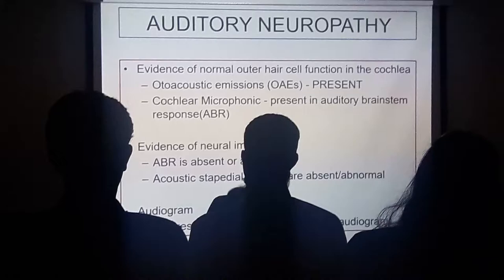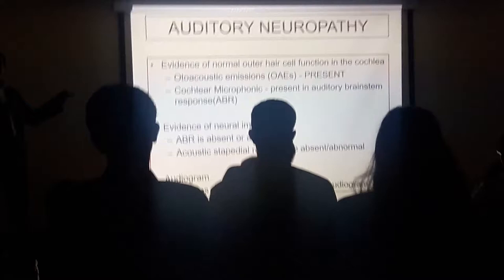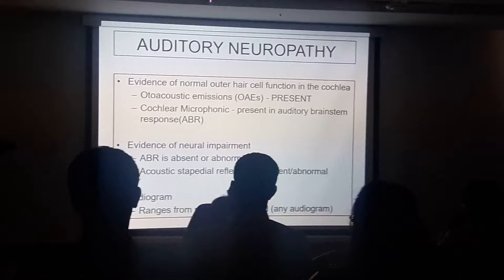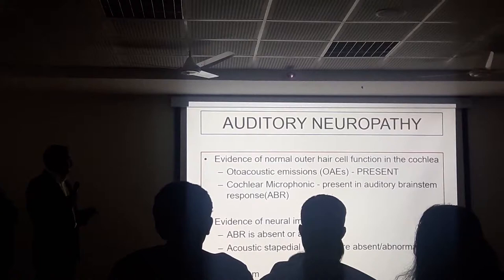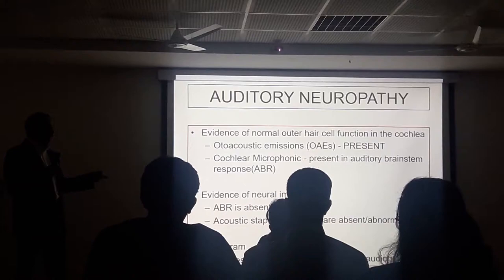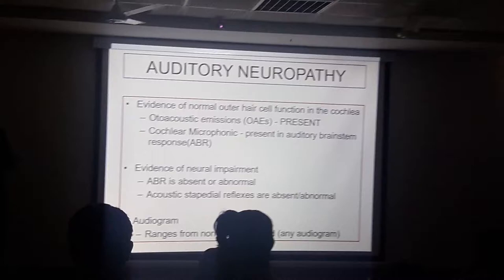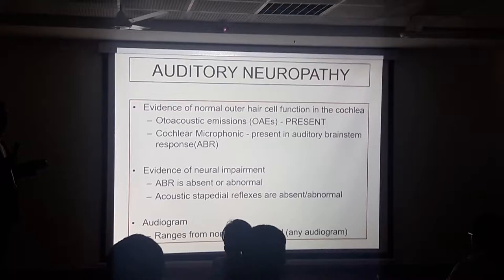In these conditions, what do you normally find? You find that there is normal outer hair cell function of the cochlea. So you will have a present or pass for otoacoustic emissions (OAEs). But the neural impairment is there, indicated by an absent or abnormal ABR. Against that, the acoustic stapedial reflex — because it involves the nerve going out and coming back — will obviously be absent or abnormal when there is a nerve problem.